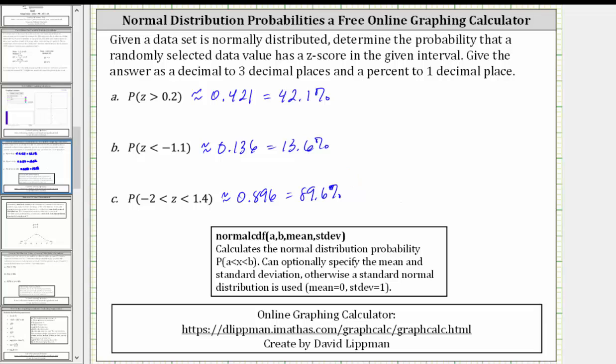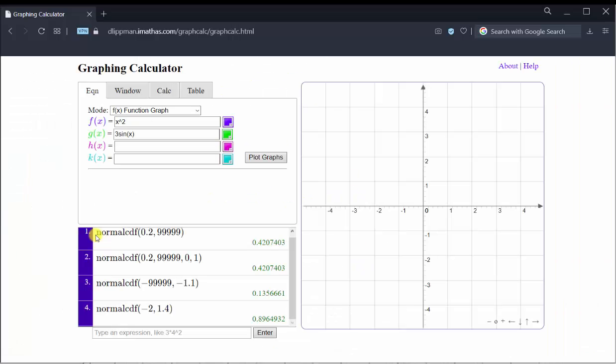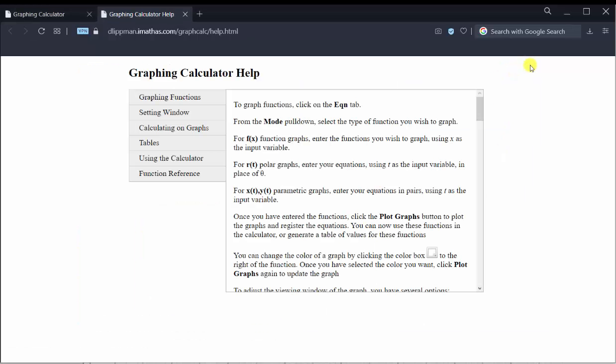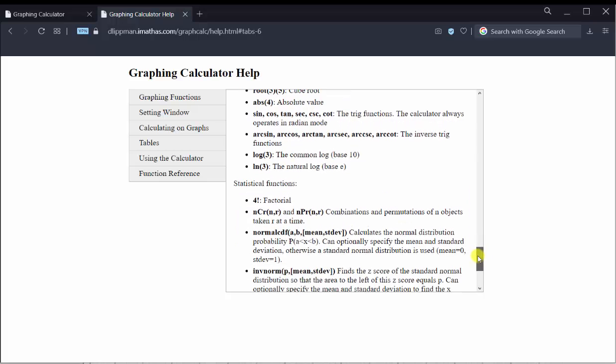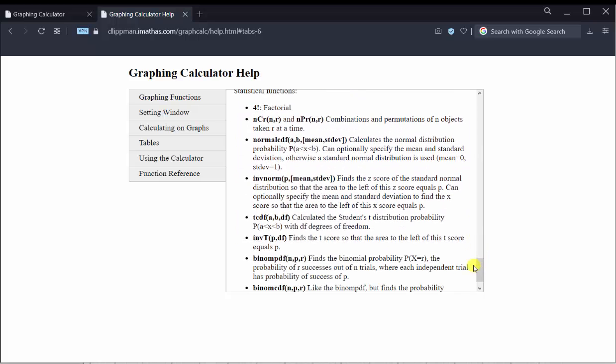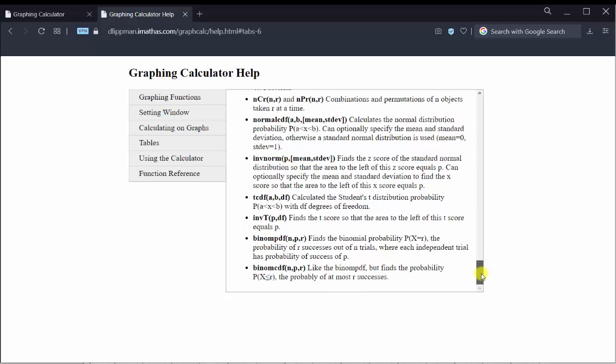Before we go, let's go back to the calculator. We can find the function normalCDF under the help menu by clicking help and then function references and scrolling down under statistical functions. Here we have the normalCDF function as well as others. I hope you found this helpful.